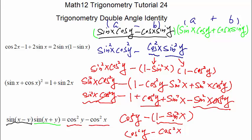For complex proving identity questions: don't panic. First, open everything up and find similar terms. Use algebra to simplify. Then reduce the number of different unknowns by converting using identities. Once simplified, match to the right-hand side — leave terms that already exist there, and convert the rest. That's the strategy.